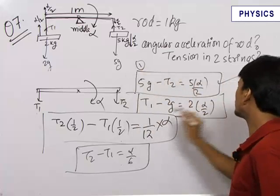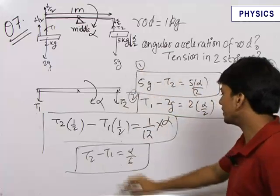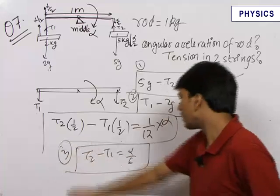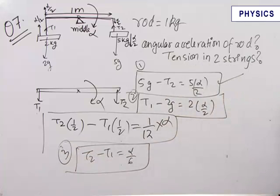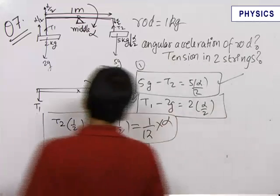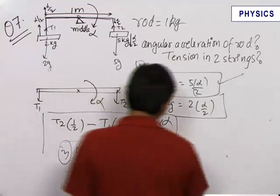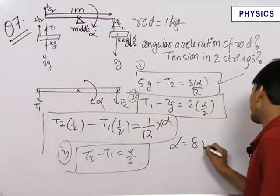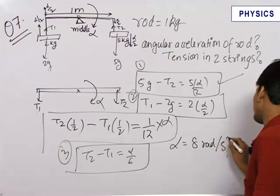T1 minus 2g is equal to 2 alpha by 2 and the third equation is T2 minus T1 is equal to alpha by 6. On solving these three equations, these three simple linear equations you can solve to find out alpha is equal to 8 radians per second square.